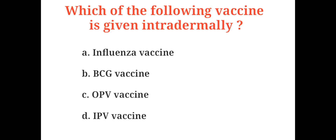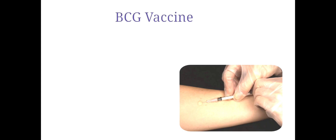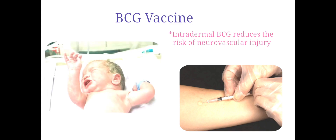Which of the following vaccine is given intradermally? A. Influenza vaccine, B. BCG vaccine, C. OPV vaccine, D. IPV vaccine. And the correct answer is B. BCG vaccine. BCG vaccine is the only vaccine with intradermal route of administration. Intradermal injection of BCG vaccine reduces the risk of neurovascular injury. BCG is the most difficult vaccine to administer due to the small size of newborn's arms.